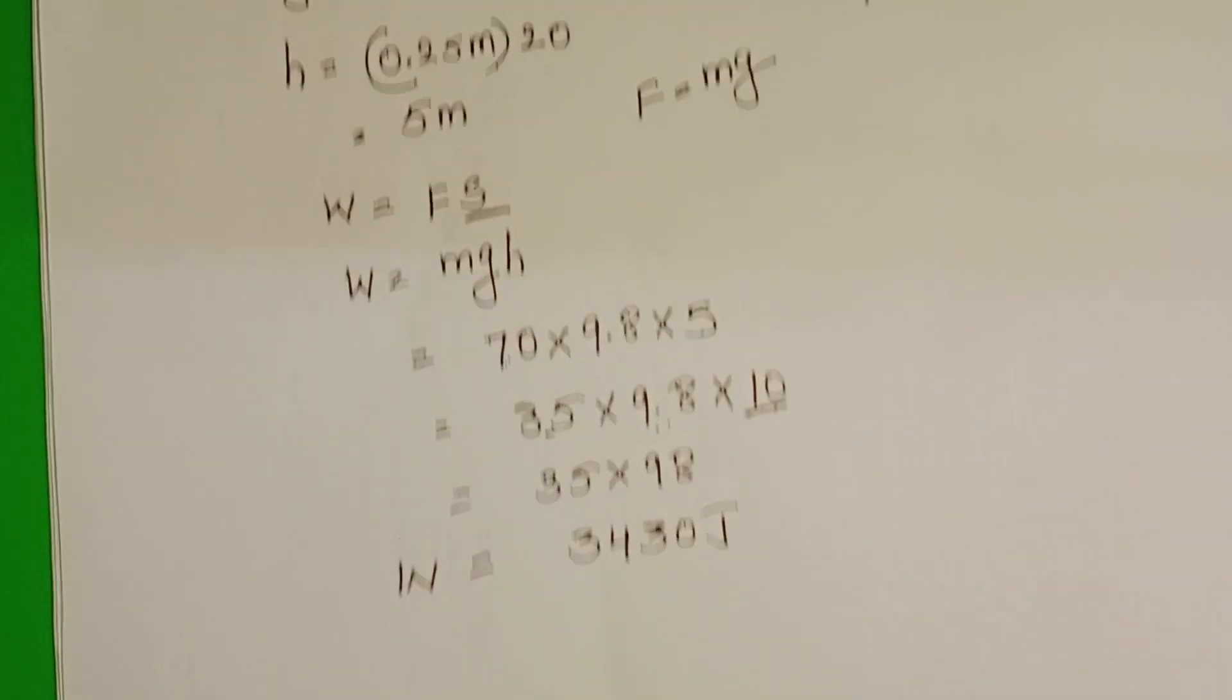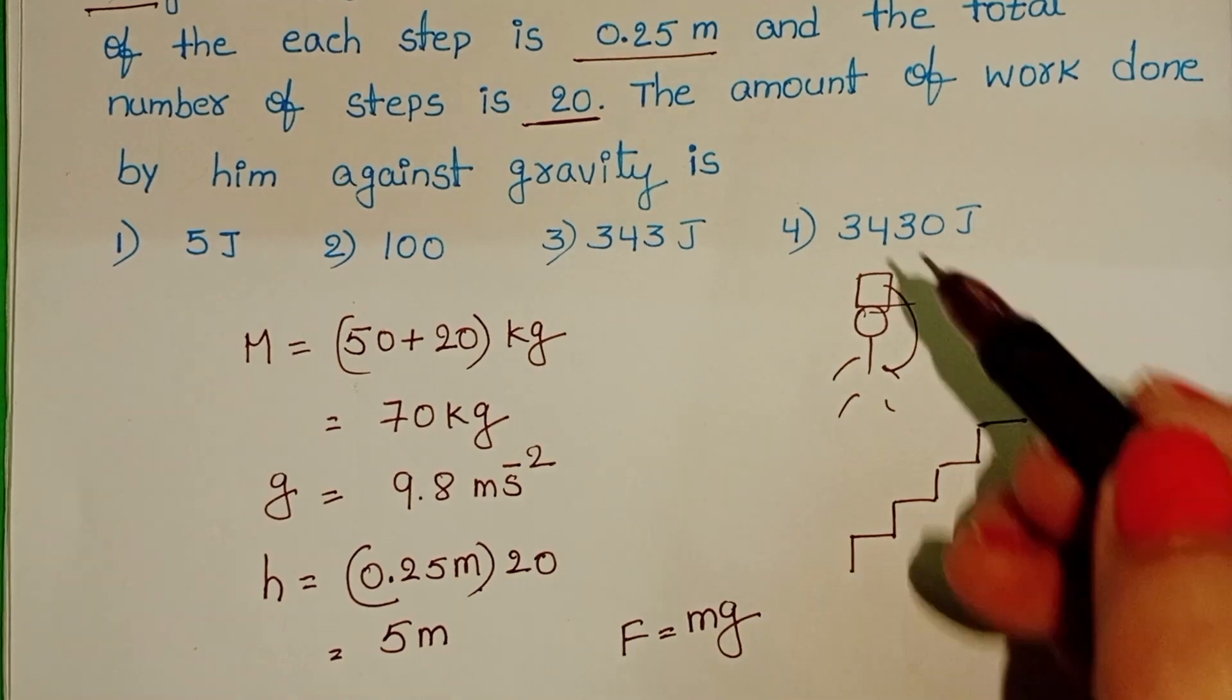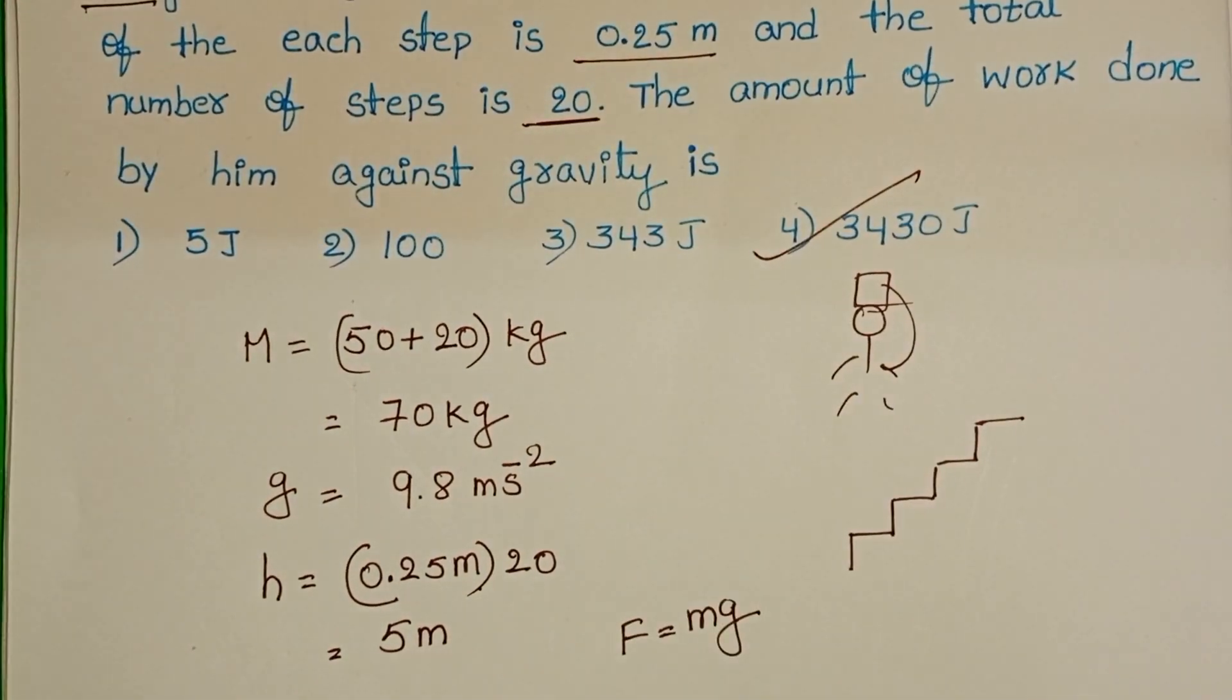So, work done by the person against gravity is 3430 joules. Fourth option is correct.